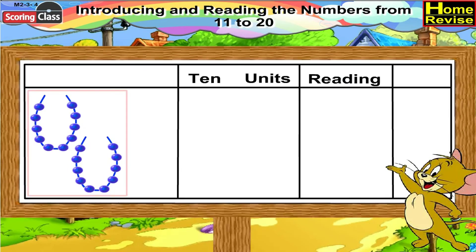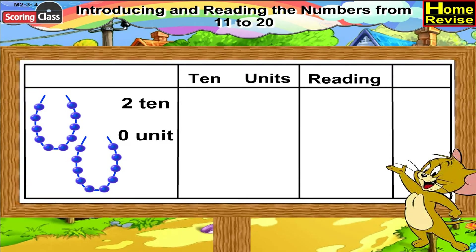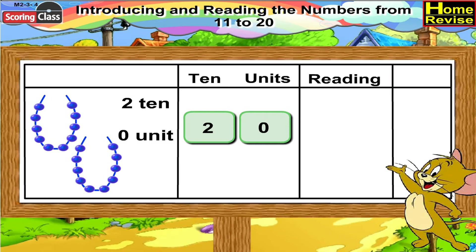We have two strings of ten beads each, which means it is two tens, zero units. So under tens you will write two, under units you will write zero. We will read it as twenty, or ten and ten.